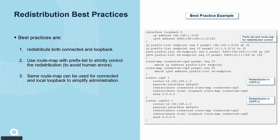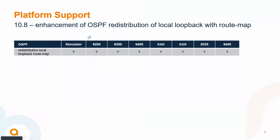A route-map can be leveraged for control. Typically you define one prefix list for loopback and one for connected, using the same route-map for both rather than separate ones — this is to simplify operations. You configure a prefix list with one sequence for the loopback and another sequence for connected. The same prefix list is used for connected — called connected-to-ospf — with sequence 10 matching the IPv4 prefix list and sequence 20 for IPv6. The redistribute connected and redistribute local loopback both use the same route-map name.